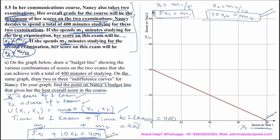Next, the question asks us to draw two or three indifference curves for Nancy. Since the utility function is a maximum function, the indifference curves take the shape of inverted-L shapes, with a kink where the two quantities are equal — that is, where x1 = x2.